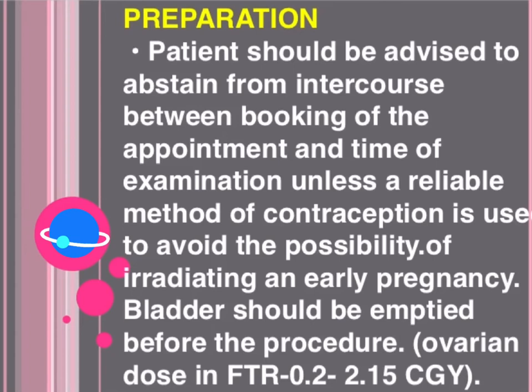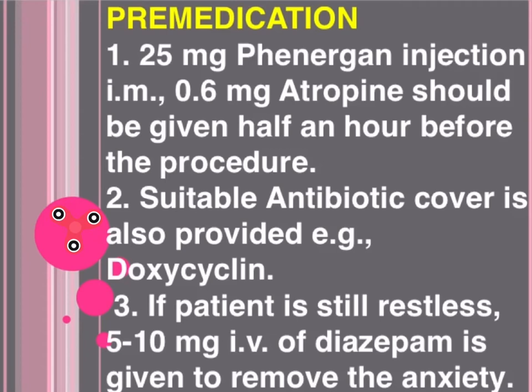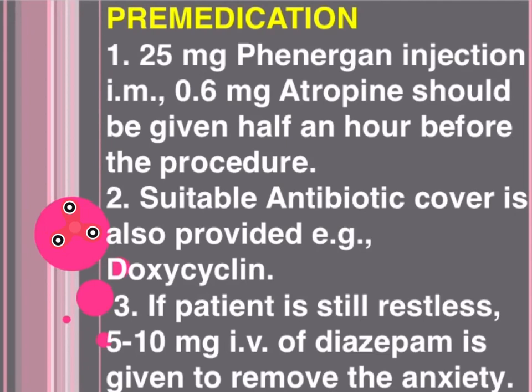Pre-medication: one, 125 mg Phenergan injection IM and 0.6 mg atropine should be given half an hour before the procedure; two, suitable antibiotic cover is also provided — for example, doxycycline; three, if the patient is still restless, 5 to 10 mg IV diazepam is given to reduce anxiety.